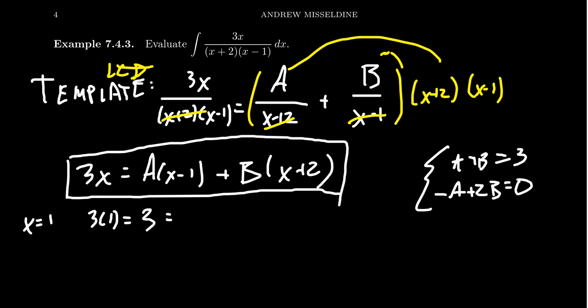On the right-hand side, we'll look like A(1-1) + B(1+2), which that simplifies to be 0A + 3B. That is 3B. We have 3 equals 3B. If you divide both sides by 3, you're going to get that B equals 1.